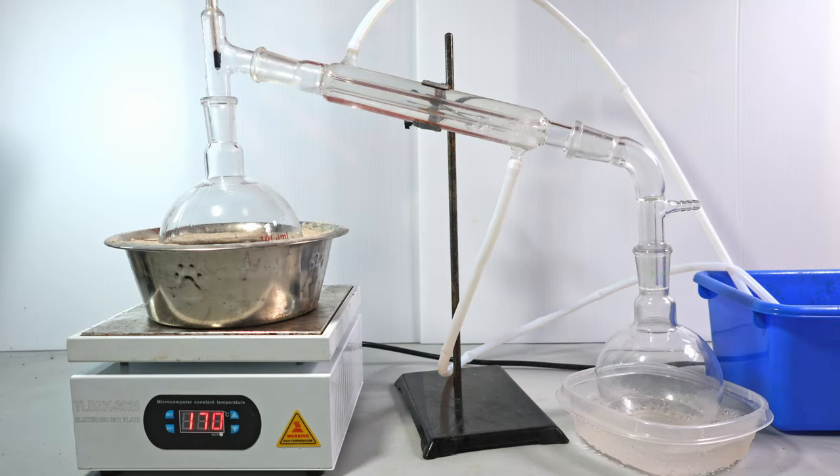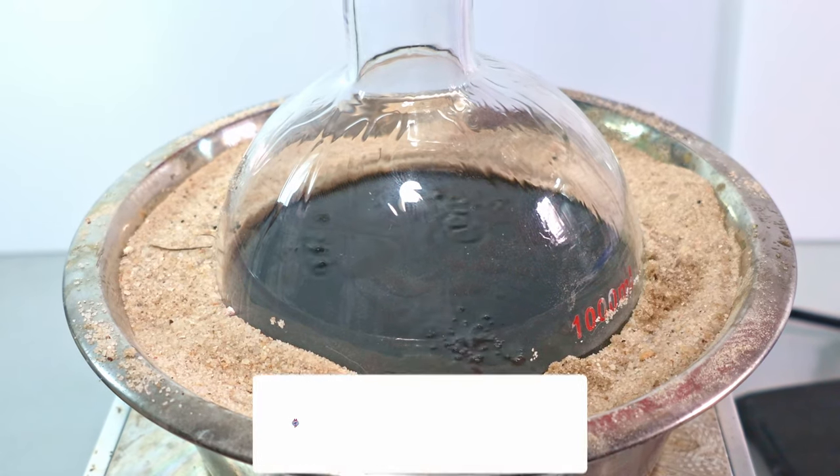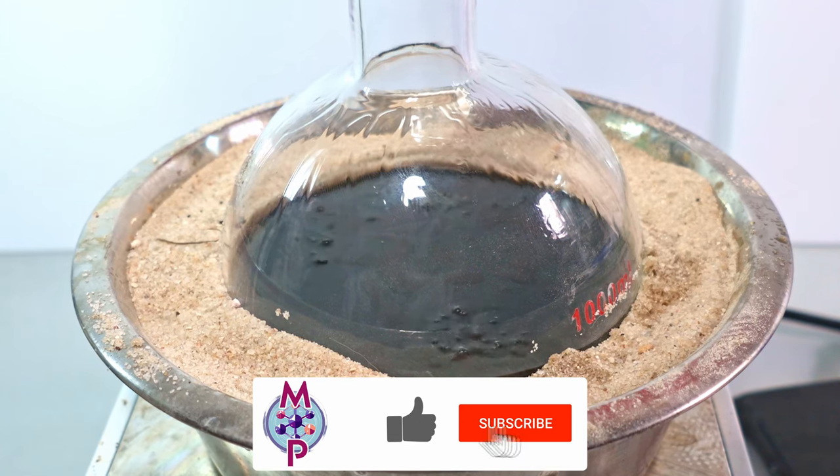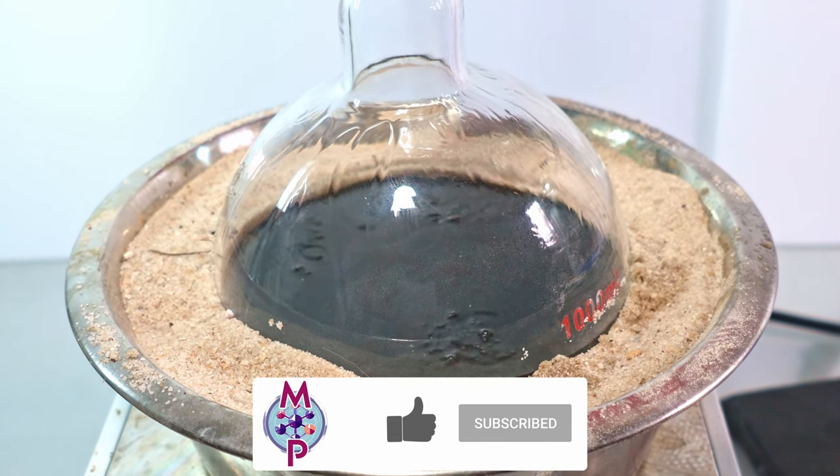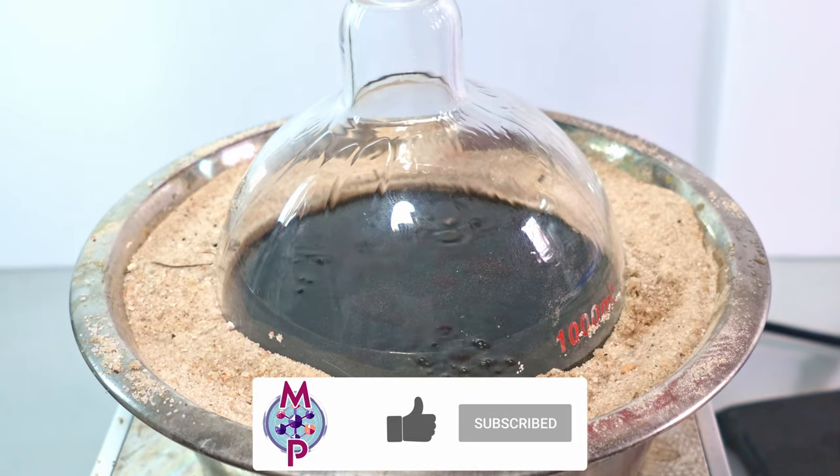Two hours later, let's see how our reaction flask looks. In the reaction flask, you can clearly see that it has become black, and that's because some of our alcohol has been oxidized. However, we're still getting a good deal of ether being produced.